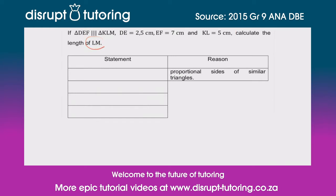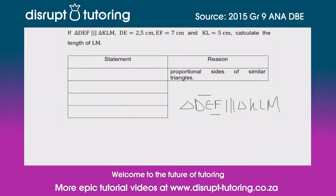They've asked us to calculate LM. I'm going to write this out a little bigger so I can work with it. Triangle DEF is similar to triangle KLM — it's all about the ratios. We've been given DE, EF, and KL, and they've asked us to calculate the length of LM, which works rather nicely.